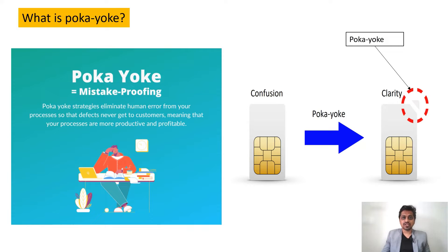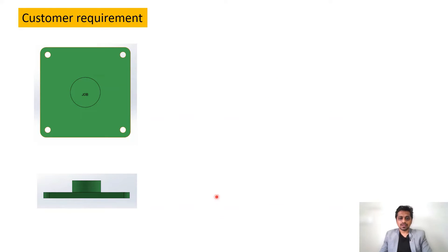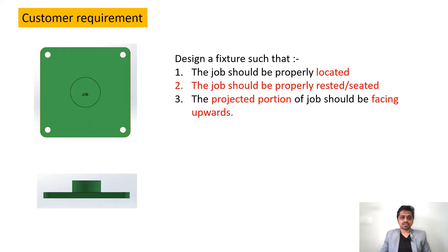Now how can we achieve this Poka-yoke in fixture design? Whenever you design a fixture, the part should fit in a particular orientation only, because that is the requirement of the process. While designing, you should keep in mind that Poka-yoke is achieved. Let's see the customer requirements: first, the job should be properly located — here is the front view and top view. Second, the job should be properly rested and seated.